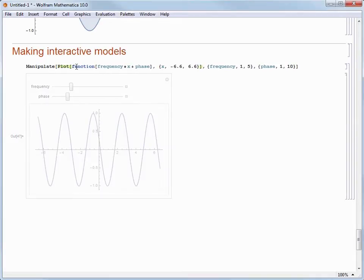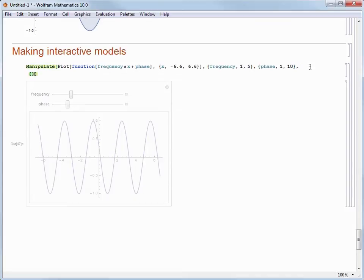Now let's go another step further by changing sign in our model to a new symbol that we'll call function. As before, we need to give Mathematica some choices for values that function can take on. So we start by creating a list to hold the values. This time though, it doesn't make sense to give Mathematica numeric values if we are going to want to choose between different functions to graph.